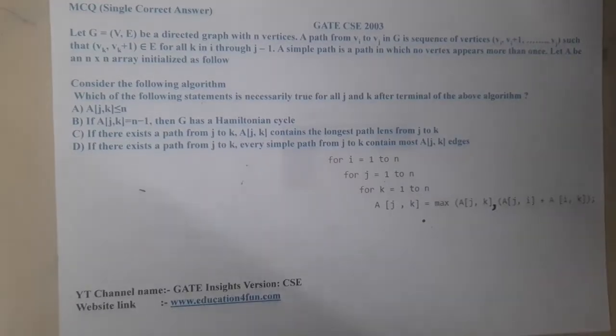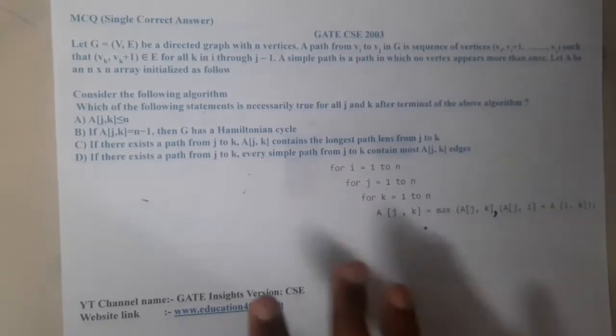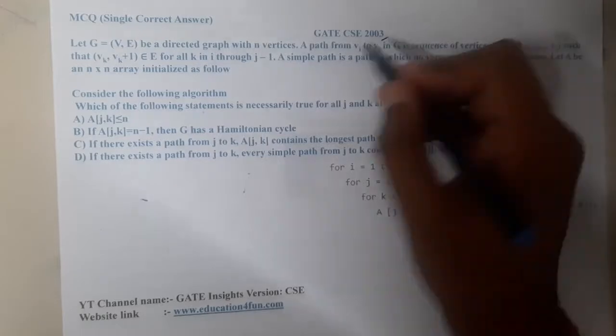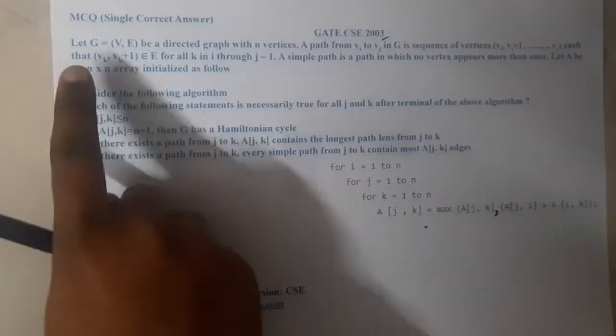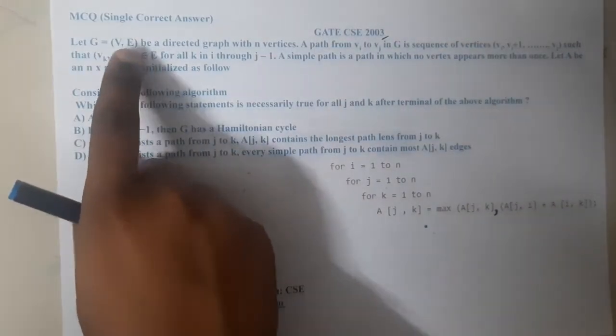Hello guys, we are back with our next lecture. In this lecture, let us go through the next question. This question belongs to GATE CSE 2003. The question is: let G equals V comma E be a directed graph with n vertices.